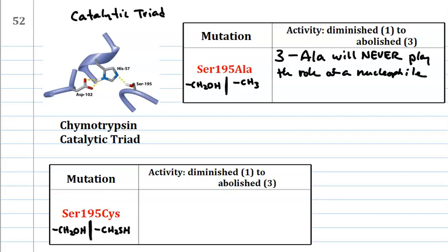Hydroxyl versus thiol group. Oxygen and sulfur are in the same column of the periodic table. They have similar properties. What do you think about this? Well, I'm thinking that I think I would go with a 1 here. And again, let's explain why that would be.